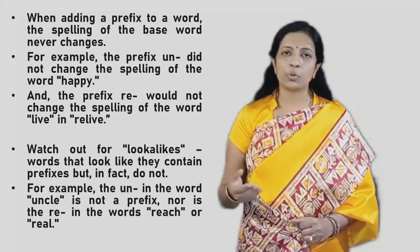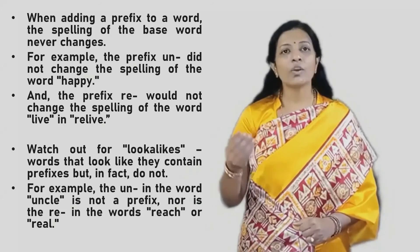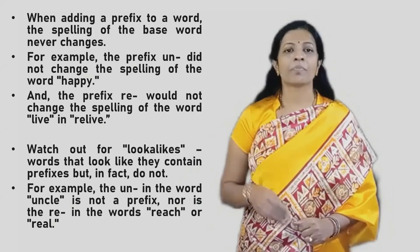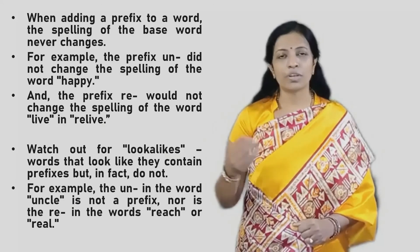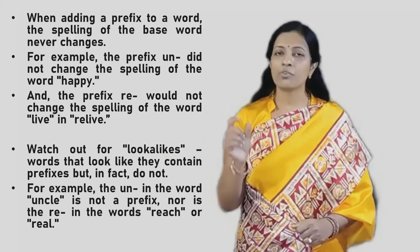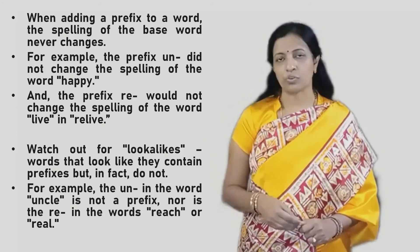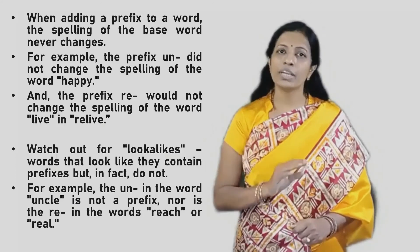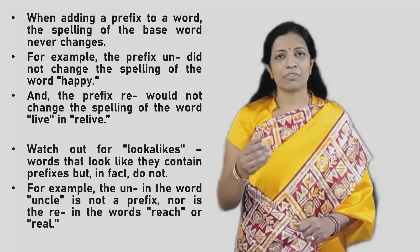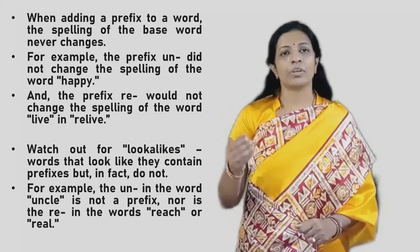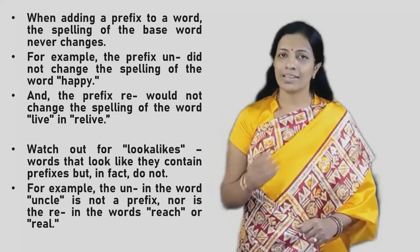Another important rule is that when we add a prefix to a word, the spelling of the root word does not change. For example, when we add UN to happy, it becomes unhappy, but the spelling of the root word happy remains the same. No matter which prefix you attach, the spelling of the root word never changes. Similarly, in the word relive, when RE is added to the root word live, the spelling of the root word does not change.